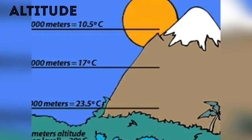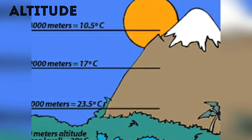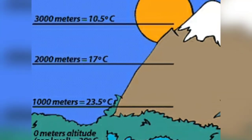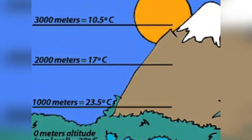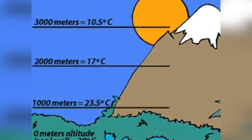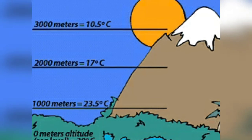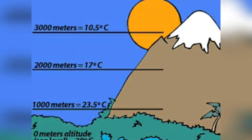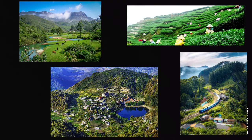Temperature decreases with increase in altitude. Temperature decreases at the rate of 1 degree Celsius for every 166 meters increase in altitude — this is called the normal lapse rate. It is because of this very reason that places located at high altitude, like Darjeeling, Shimla, Nainital, etc., remain cold throughout the year.